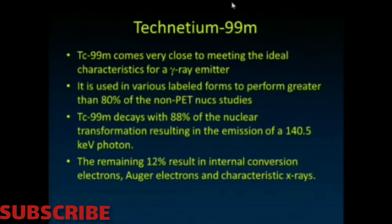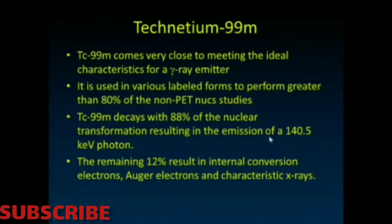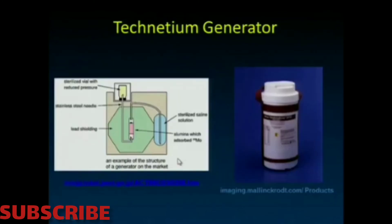Technetium-99m as a radionuclide comes really close to the ideal properties we talked about — that's why you see it used in various labeled forms to perform greater than 80% of non-PET nuclear studies. It decays with 88% of its nuclear transformations resulting in the emission of a 140 keV photon, which is ideal: it escapes the body, yet is still low enough that we can stop it fairly readily with our detector. Unfortunately the remaining 12% results in energetic electrons that deposit dose in the patient, but that's a relatively small amount. For this reason, a lot of chemistry has been developed around technetium.